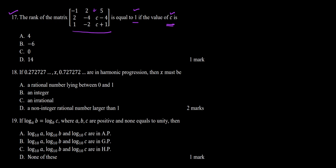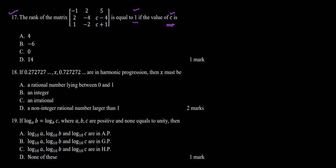In order for the rank to equal 1, the second column and the third column should be multiples of the first column. As you can see, column 2 is already a multiple of column 1 — if we multiply column 1 by minus 2, we get column 2: minus 1 times minus 2 gives 2, 2 times minus 2 gives minus 4, and 1 times minus 2 gives minus 2. But we still need to make column 3 a multiple of column 1.